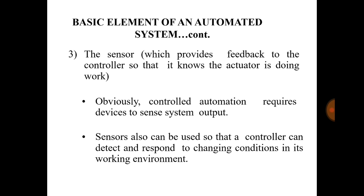The next and final element is the sensor. A sensor provides feedback to the controller so that it knows the actuator is doing the work. Basically a sensor is a feedback device which gives feedback to the controller that the actuator is performing the specified task. Controlled automation requires devices to sense the system output — you need a mechanism that senses the instructions given by the controller and confirms that the work is being performed. Sensors can also detect and respond to changing conditions in the working environment, and are used for measuring the output.